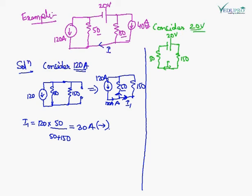Now consider the 20 Volt source. When we consider 20 Volt, both current sources will be open circuited. The equivalent circuit gives I2 equal to 20 upon the sum of the resistances, which is 200, giving I2 equal to 0.1 Ampere. The direction of current will be this way, because positive terminal is here, so the current flows this way.